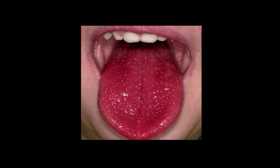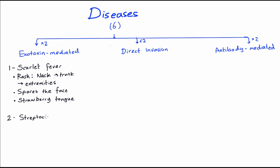The second exotoxin mediated disease is called streptococcal toxic shock syndrome. This resembles the staph aureus toxic shock syndrome and is basically mediated by a similar toxin which acts as a superantigen. Superantigens activate multiple T cells from different clones and you have a huge inflammatory systemic response.